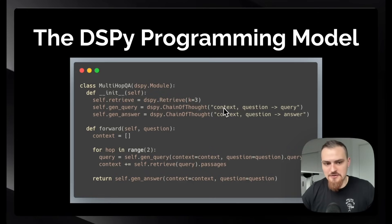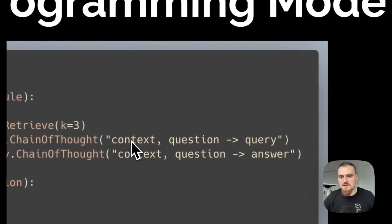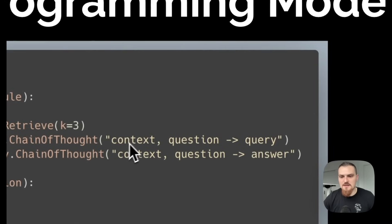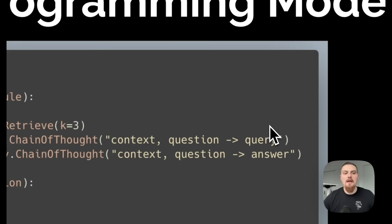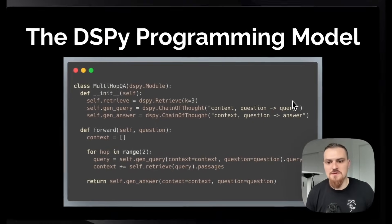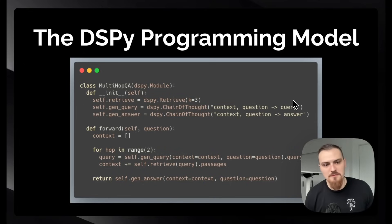One approach is this shorthand syntax. In the syntax, we're saying 'context question query.' What this does is DSPY will parse this into input field context, input field question, and will output a query. These LLMs are so good at inferring what the variable is supposed to be just based on the name alone.